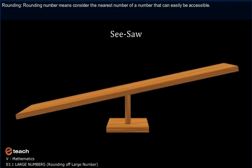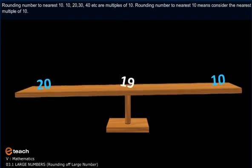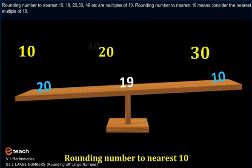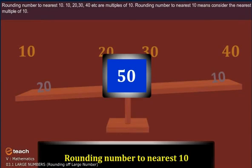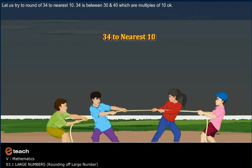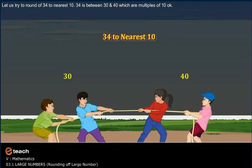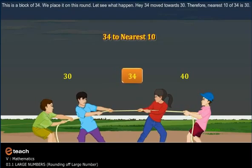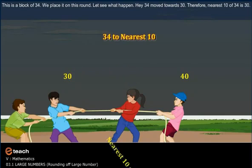Rounding. Rounding a number means considering the nearest number that can easily be accessible. Rounding a number to the nearest ten means finding the nearest multiple of ten — ten, twenty, thirty, forty, etc. Let us try to round thirty-four to the nearest ten. Thirty-four is between thirty and forty, which are multiples of ten. Thirty-four moved towards thirty. Therefore, the nearest ten of thirty-four is thirty.